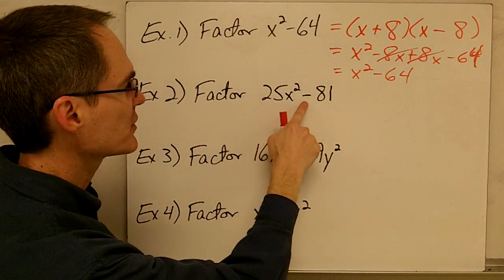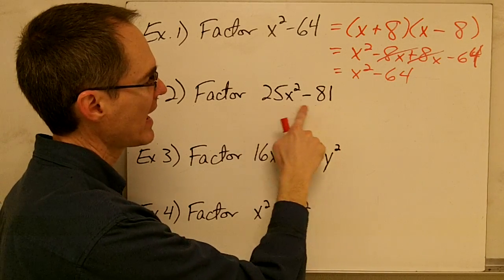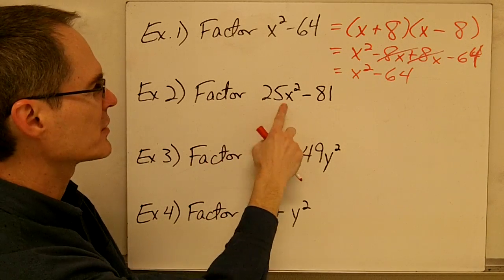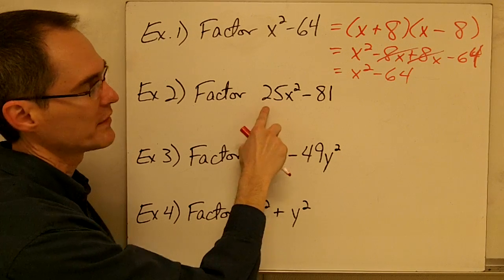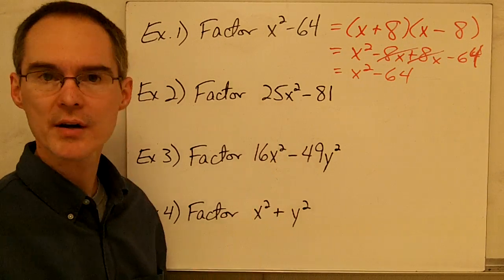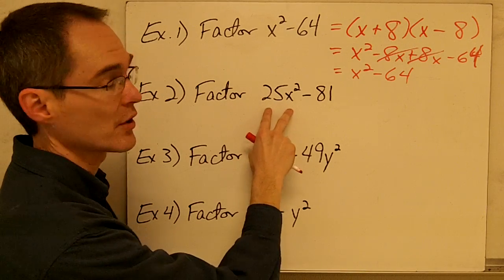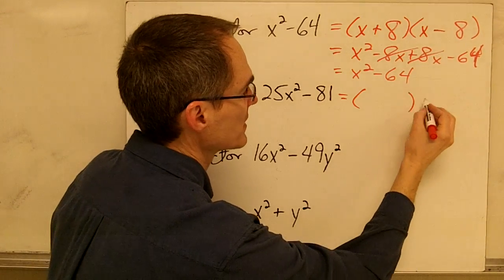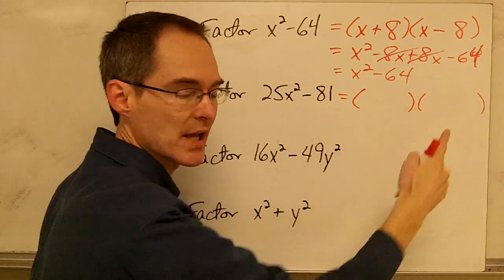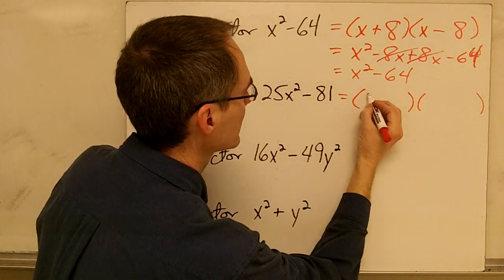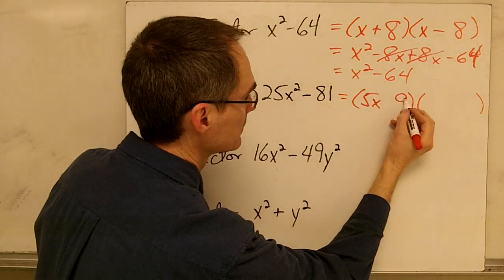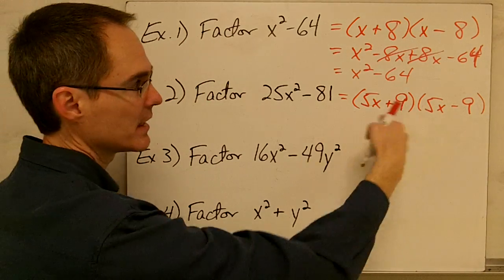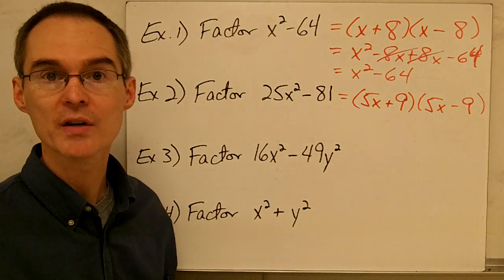Example two: factor 25x squared minus 81. We have the difference of two perfect squares. The coefficient 25 is a perfect square — its square root is 5 — and x squared is a perfect square with square root x. So the square root of the first term is 5x, and the square root of 81 is 9. Factoring gives us 5x plus 9 times 5x minus 9. You can verify by multiplying out to get 25x squared minus 81.